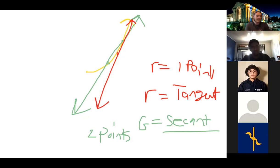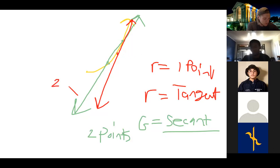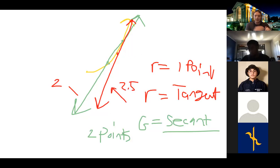The secant points become closer and closer together until they collapse into one point — kind of like a singularity. Draw a line through it: that's the tangent line. The secant slope might be approximately 2 and the tangent slope 2.5 — similar but the tangent is super precise while the secant is only somewhat precise.